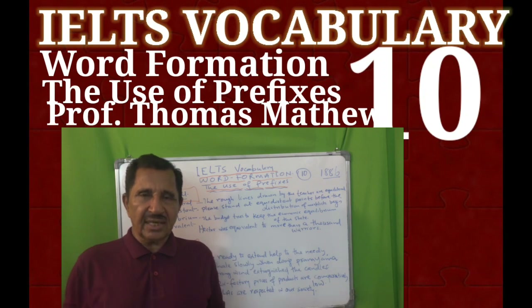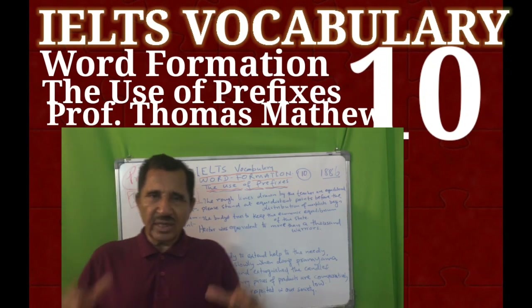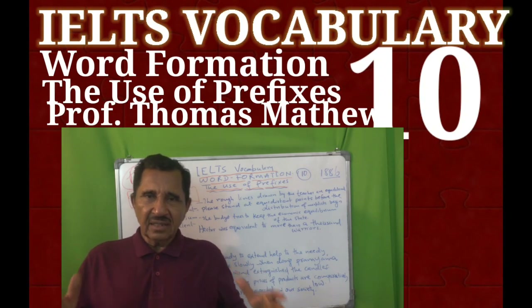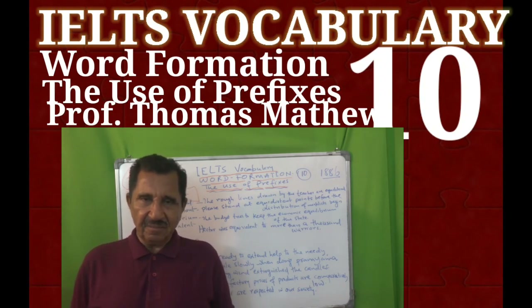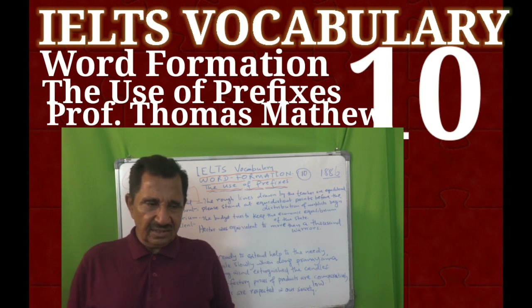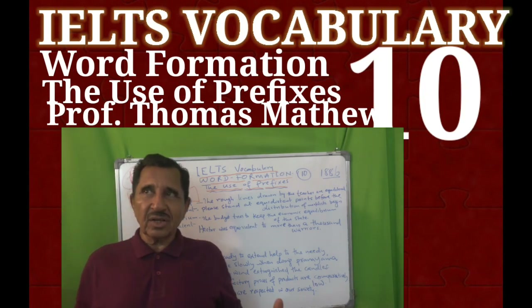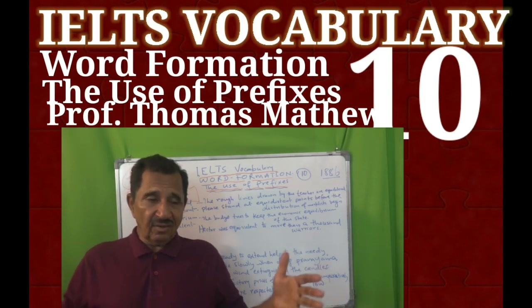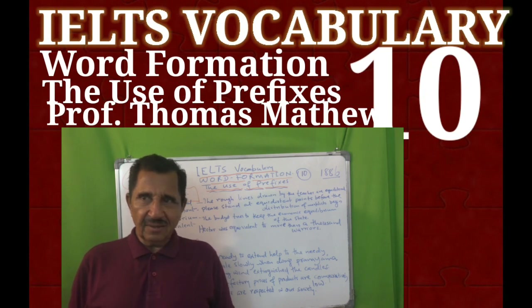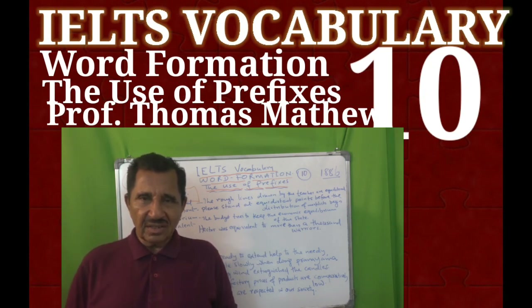The first one is Equilateral, meaning having equal sides. The triangle has two equilateral sides, meaning equal lines. The room has two equilateral walls. The box has two equilateral sides — you can say like that.